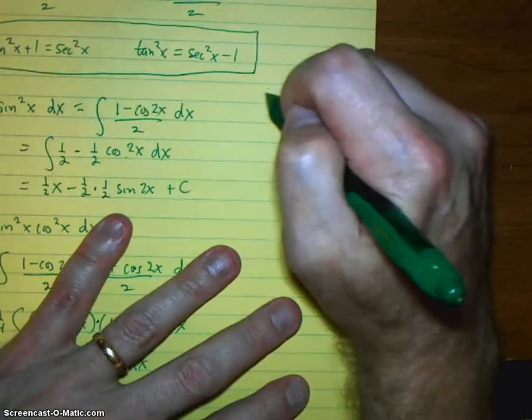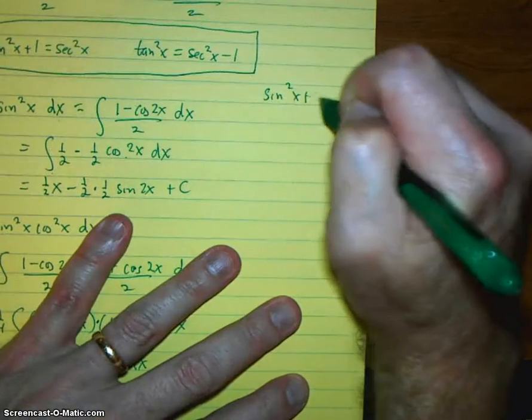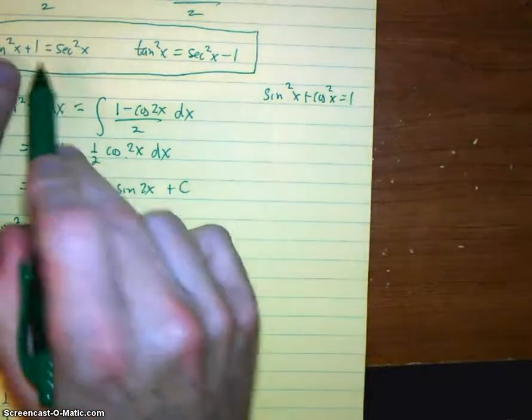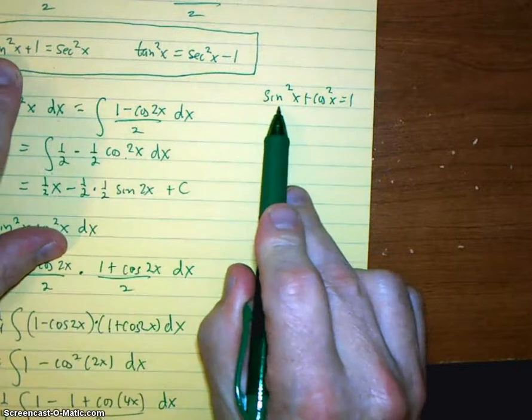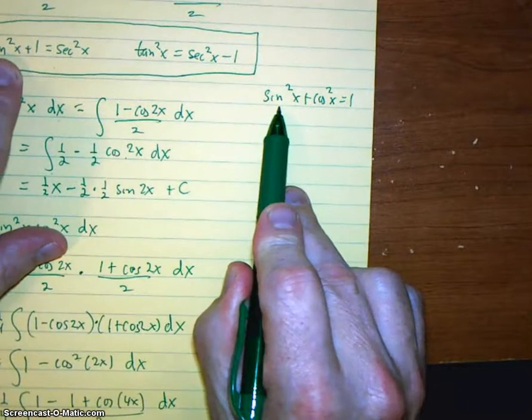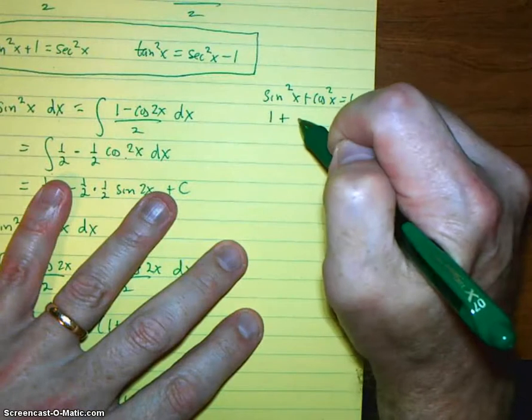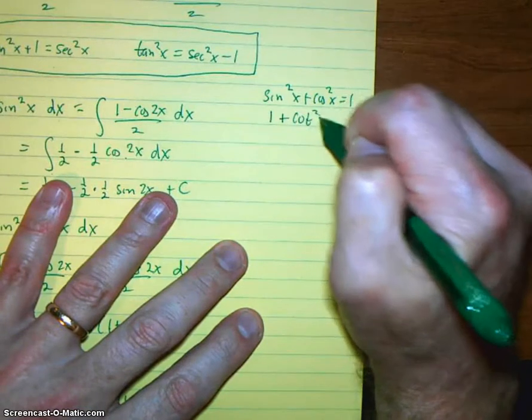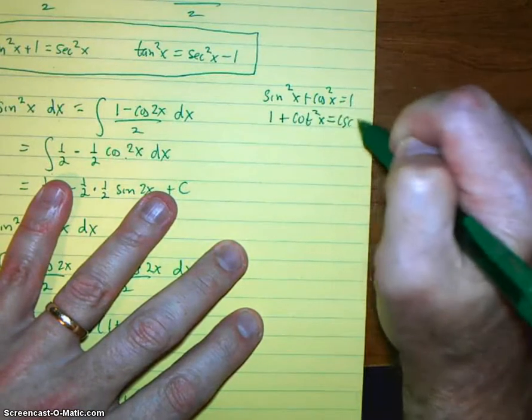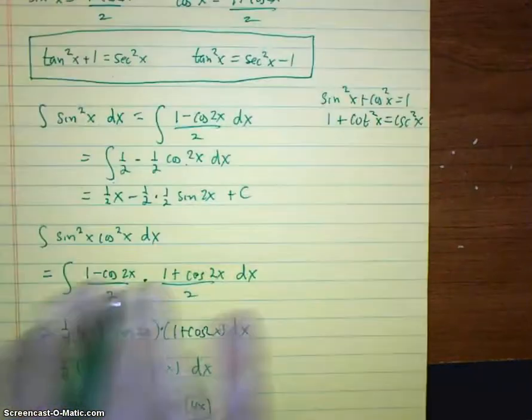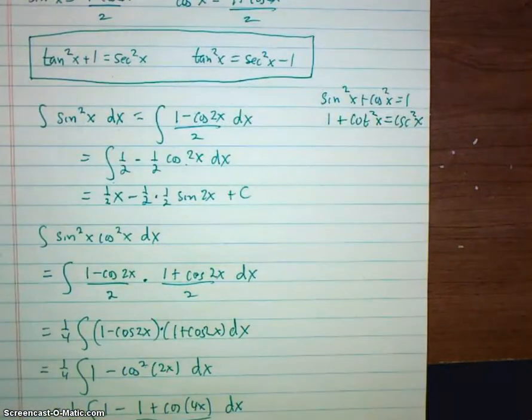You've got the exact same formulas. So these came from sine squared x plus cosine squared x equals 1. If I got these by taking this and dividing by cosine squared. If I take this formula and divide by sine squared, I get 1 plus cotangent squared x equals cosecant squared x. So you really have the same formulas. And the rules we're going to talk about are exactly the same for cotangents and cosecants.